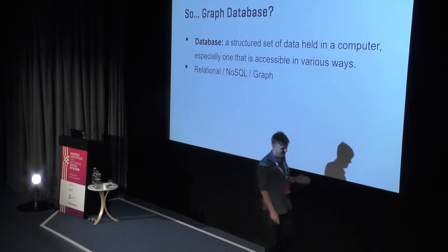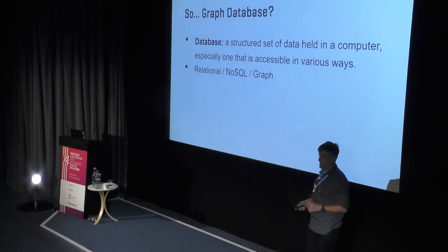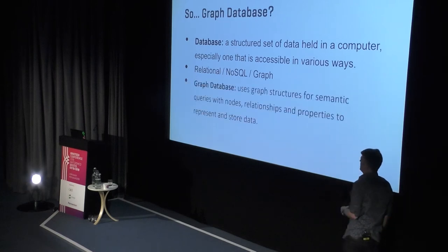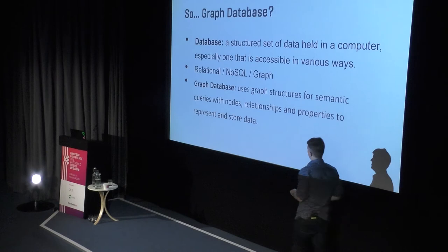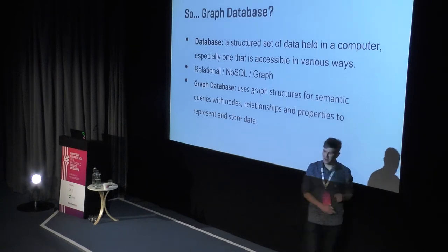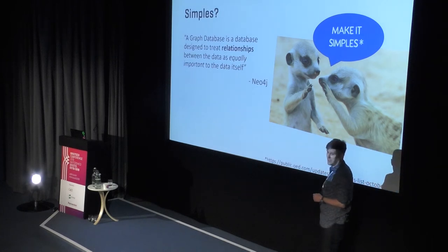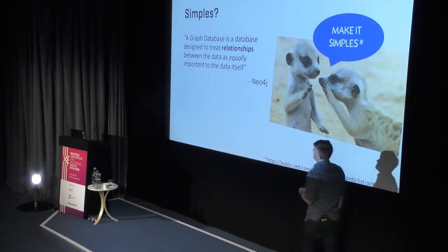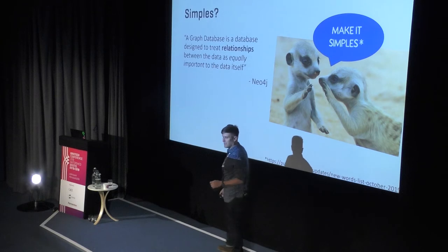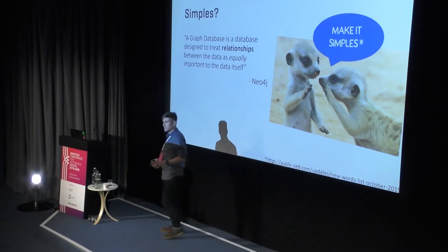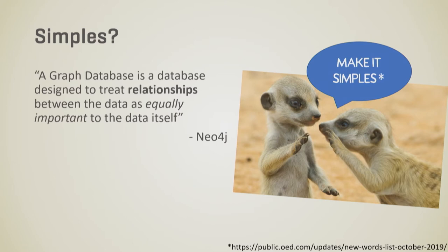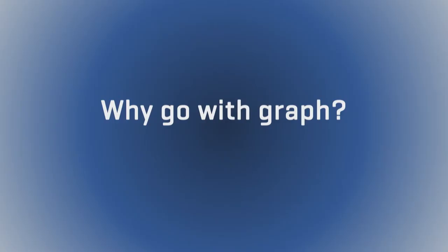So we know what a database is — three broad churches — and a graph database uses graph structures for semantic queries with nodes, relationships, and properties to represent stored data. In practical terms, it's a database designed to treat relationships between the data as equally important as the data itself — something that most other databases don't do. Relationships are first-class citizens.